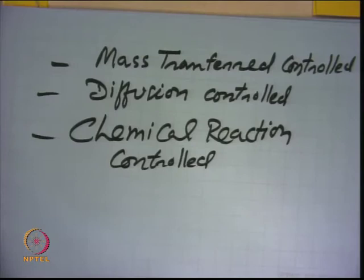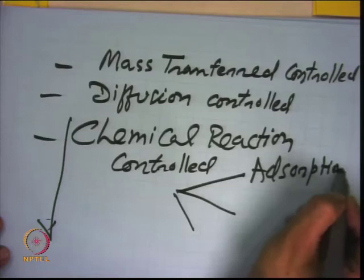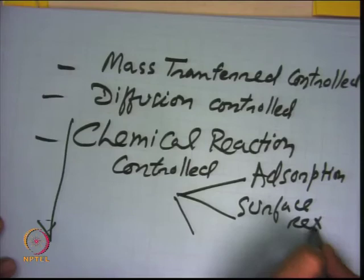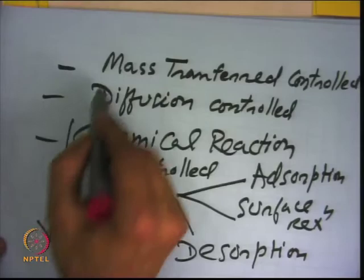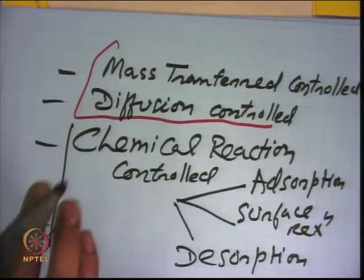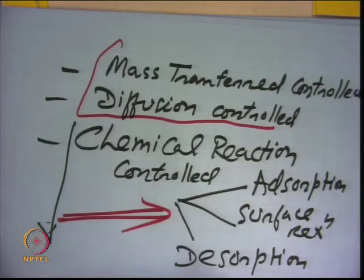In chemical reaction control there may be adsorption control, surface reaction control, or desorption control. This is what the reaction mechanism means — understanding the mechanism of a catalytic reaction — because this decides what product will form. That is important from the catalytic viewpoint.